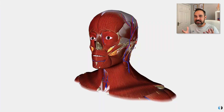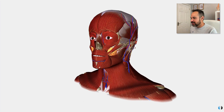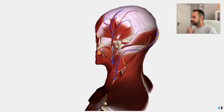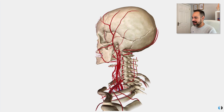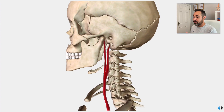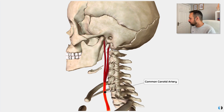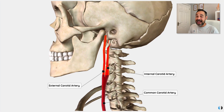First of all, we need to dive into the blood supply around the neck and the brain, and no better place to start than with our anatomy model. Let's flip this model to the back and we can show you some of the major arteries around the cervical spine. The first ones to show you are the carotid arteries. We have the common carotid artery, which arises from the thorax and then splits into the internal and external carotid arteries.